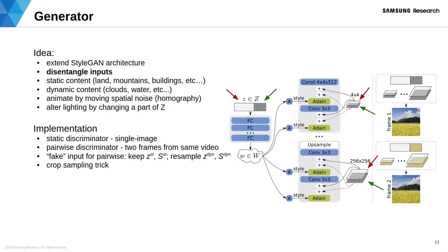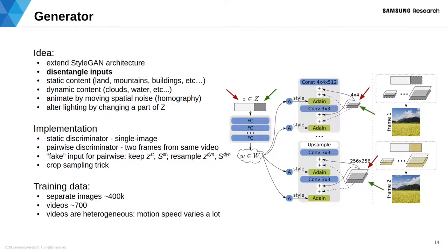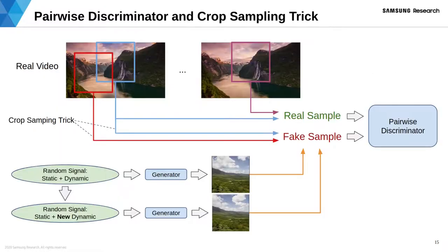The pairwise discriminator focuses on validating that the temporal change between two frames is plausible. We found it very difficult to obtain a large, consistent, and high-quality video dataset. Thus, we use a large dataset of images and a small video dataset. Importantly, we don't align motion speed in different videos. In order to focus the pairwise discriminator on motion and to prevent overfitting to the small video dataset, we employ a simple crop sampling trick.